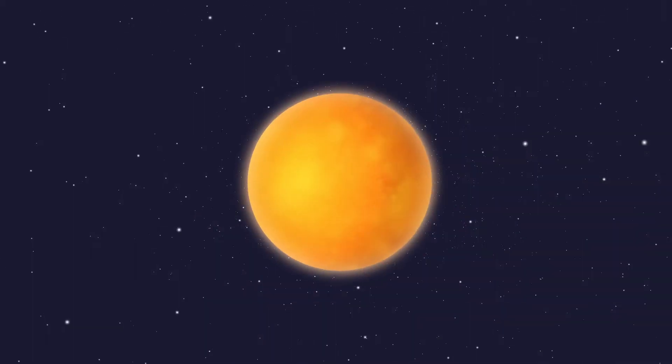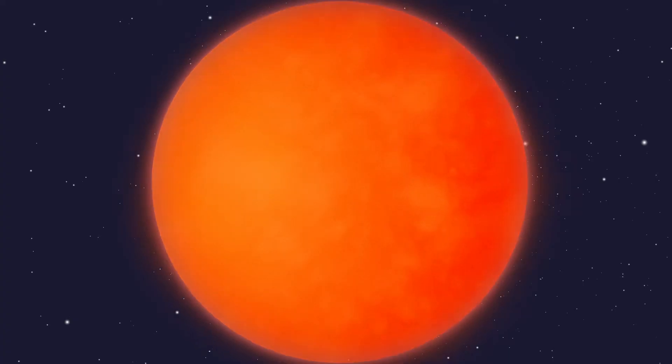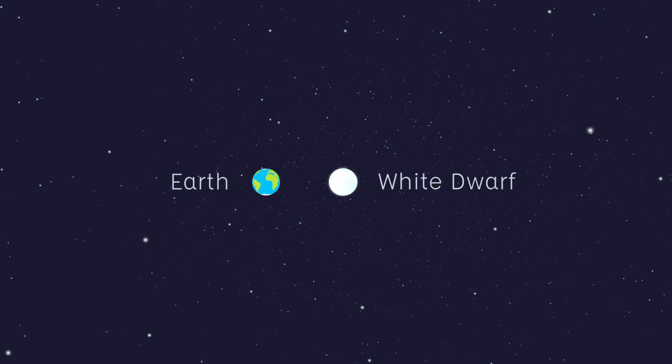Our Sun, which is a medium-mass star, will instead eventually discard its outer layers, exposing just the core. This core is small, hot, and bright, and roughly the size of the Earth. We call it a white dwarf.